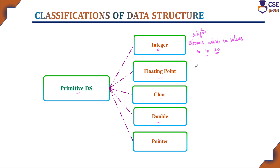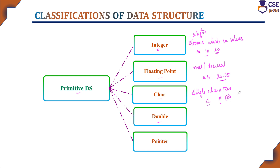Floating point stores real or decimal values, like 10.5 or 20.25. Character data type stores a single character — any single character, such as lowercase 'a', uppercase 'A', special symbols like '@', or a numeric character like '9'. It occupies one byte of memory location.